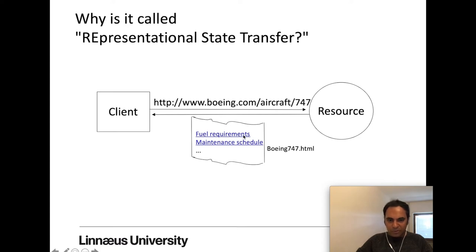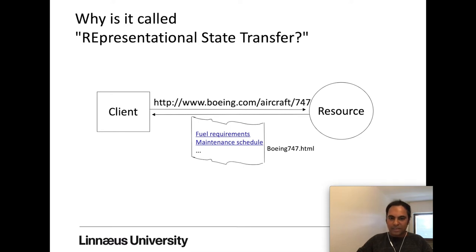When the client selects a link in REST, it is known as a hyperlink. In this document, 'fuel requirements' is a link and 'maintenance schedule' is a link — there might be multiple links provided as part of the response. The client can follow these links to further move on. This is called state transition. For each transition we might change the representation and also get new states or new links, transferring from one state to another. This is how the name was proposed: Representational State Transfer.